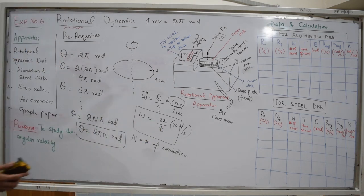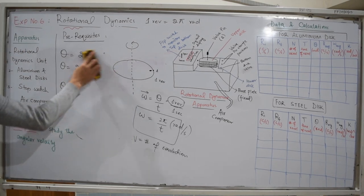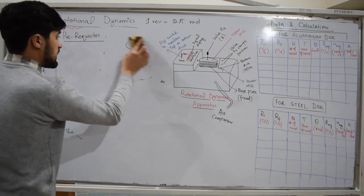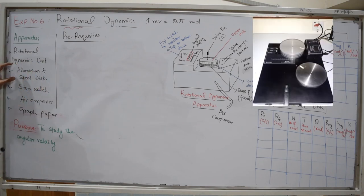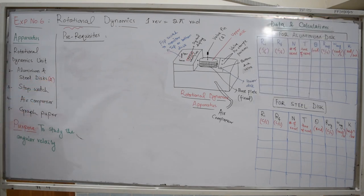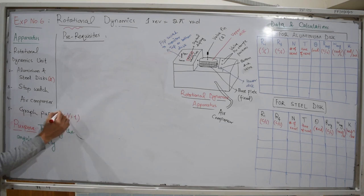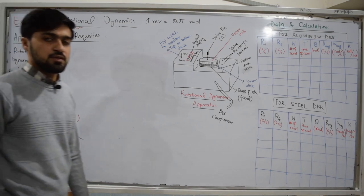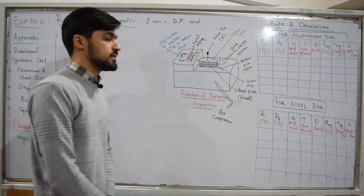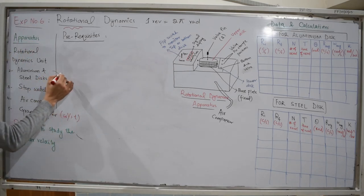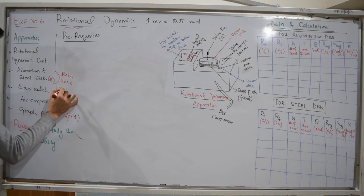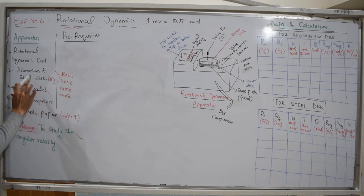Now let's move to our experiment. The purpose is to study angular velocity using disks. The apparatus required is the rotational dynamics unit. We will need three disks: one aluminium disk and two steel disks, a stopwatch, an air compressor, and graph paper to plot angular velocity versus time. Both the aluminium and steel disks have the same radii, but different masses because their densities differ.